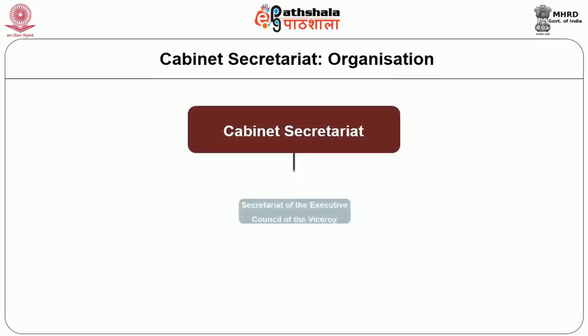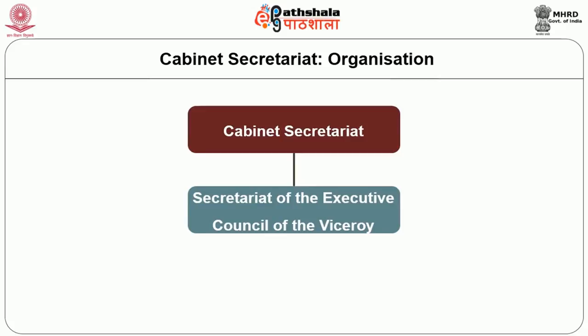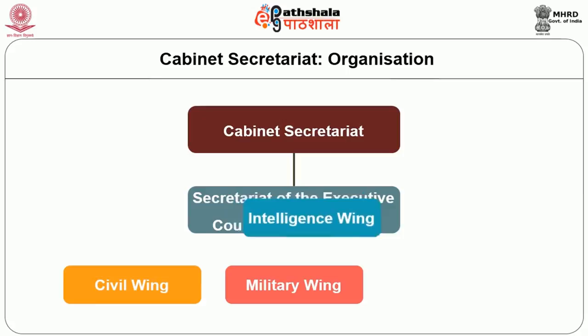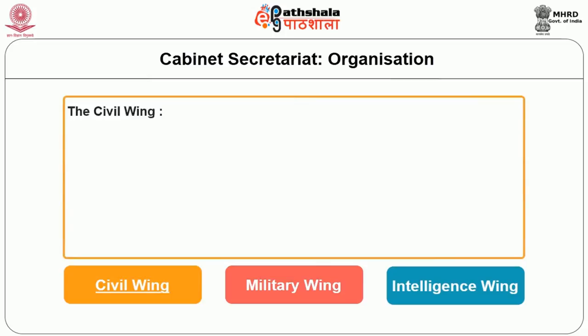Let us discuss the organization of the cabinet secretariat. The cabinet secretariat inherited its structure from the secretariat of the executive council of the Viceroy. It is organized into three wings: first, the civil wing; second, the military wing; and third, the intelligence wing.